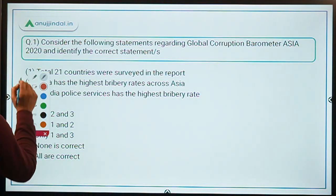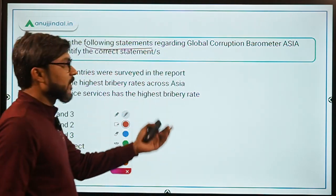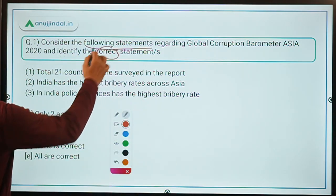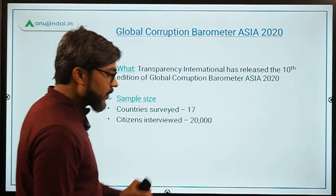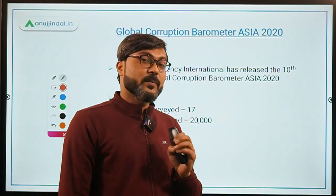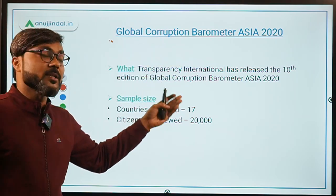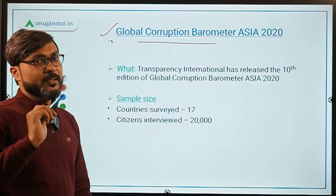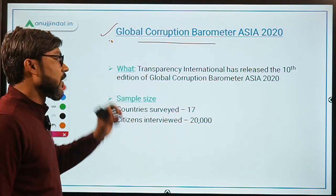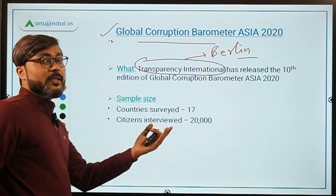The first question is about the Global Corruption Barometer Asia 2020. You have to consider the given statements regarding this report and identify the correct statement. This report is not the Corruption Perception Index - that is a different report launched every year by Transparency International. This report has also been launched by Transparency International, which is headquartered in Berlin, Germany, and it was the 10th edition of this report.